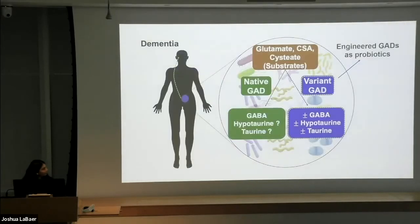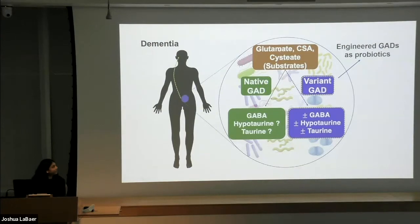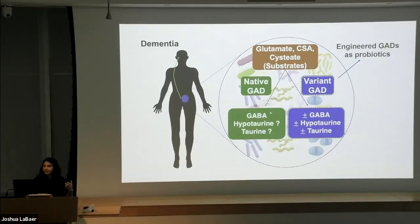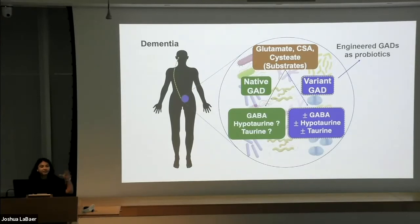We know there are native glutamate decarboxylases in the gut which make GABA from glutamate. Additionally, what we are doing right now is creating engineered enzymes — variants of this native enzyme — that can actually alter the specificity and make taurine as one of the products. The idea is then to use them as probiotics, so that a combination of these two neurotransmitters can help patients with dementia.